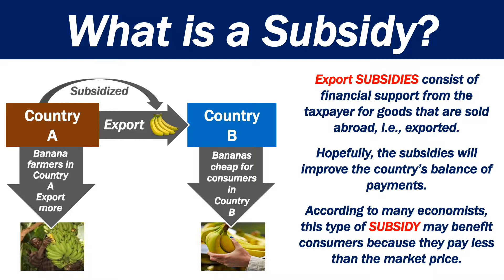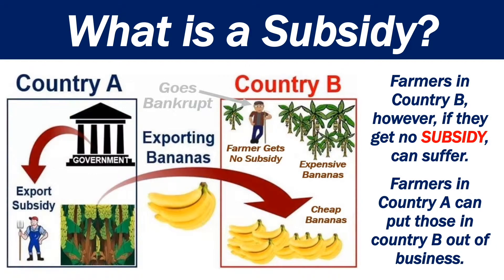For example, country A exports subsidised bananas to country B. The bananas are cheap for consumers in country B. Farmers in country B, however, if they get no subsidy, can suffer, as farmers in country A can put those in country B out of business, because their product is a lot cheaper.